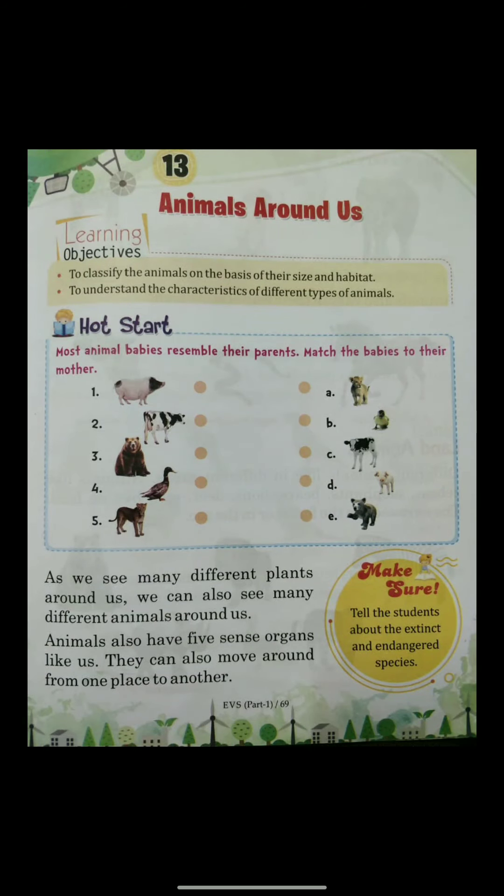Very good morning to everyone. This is your EBS class. Today we will read chapter 13, that is Animals Around Us. In the previous class, we saw that there are so many plants around us. Similarly, we can also see many different animals around us.